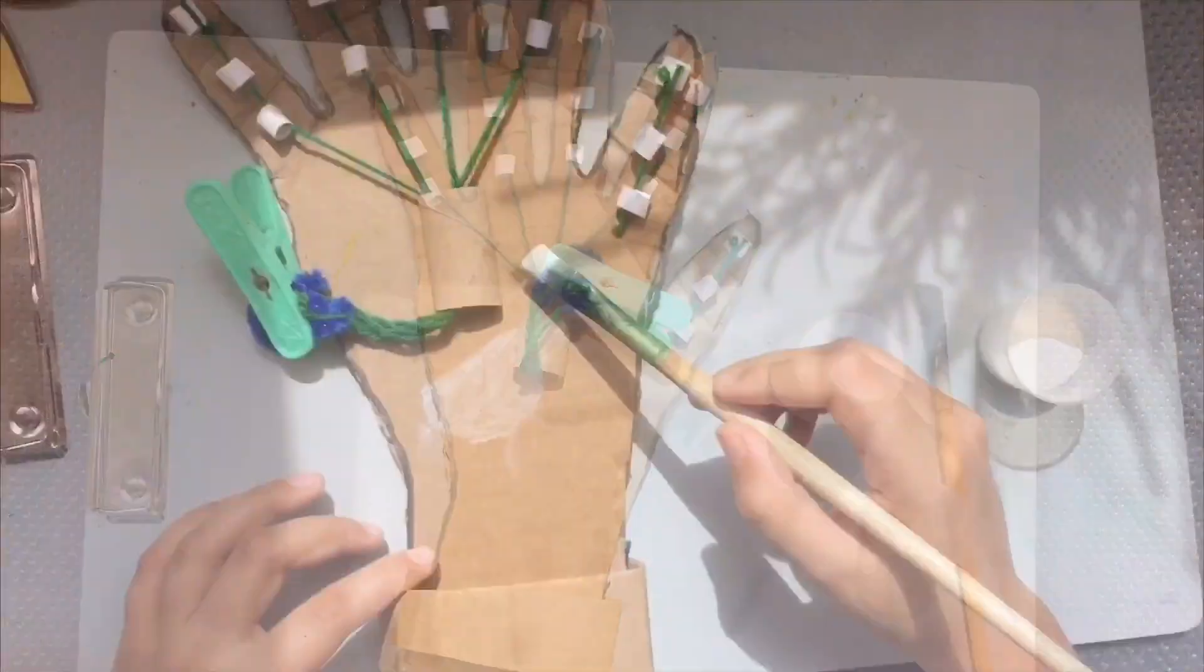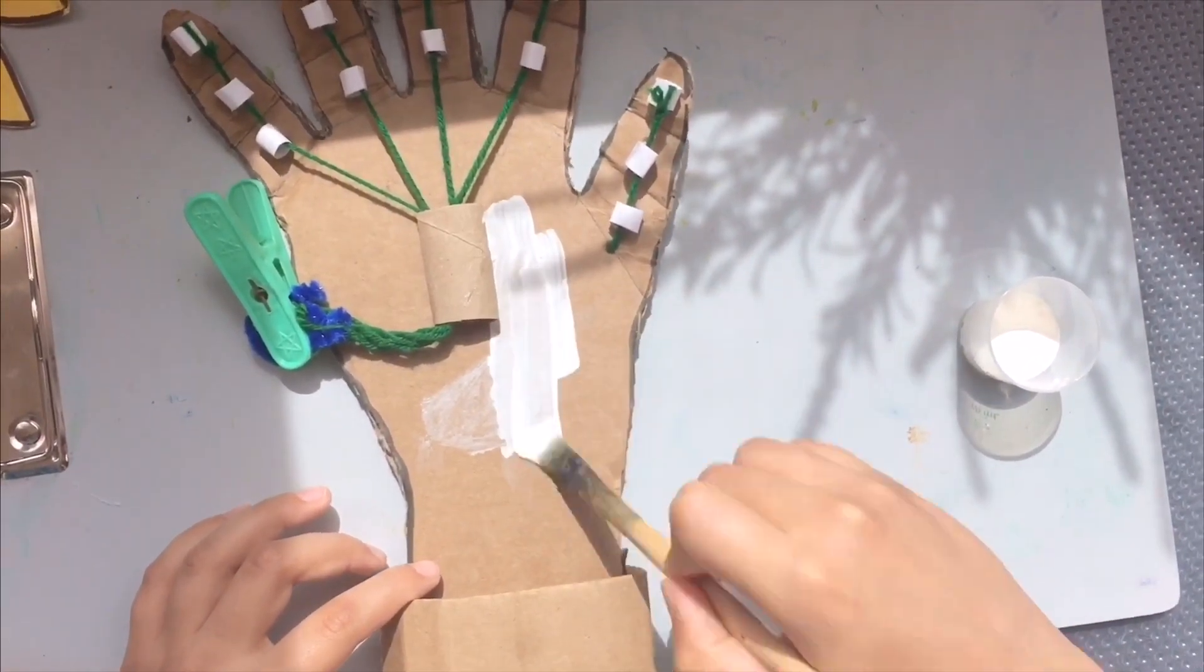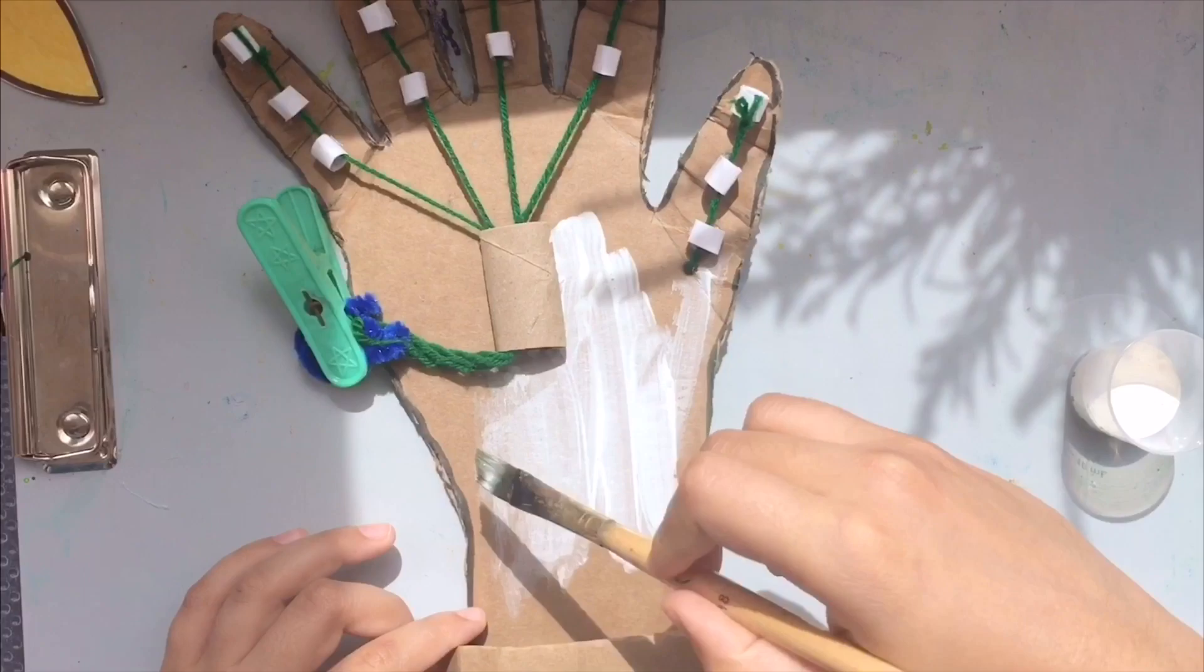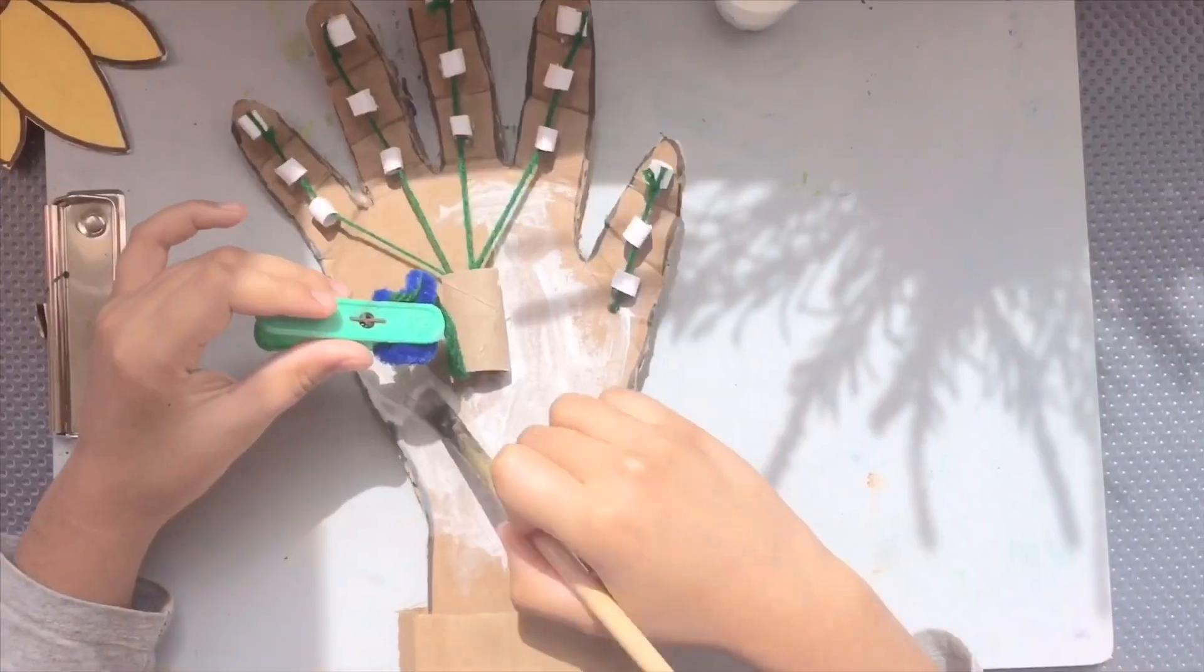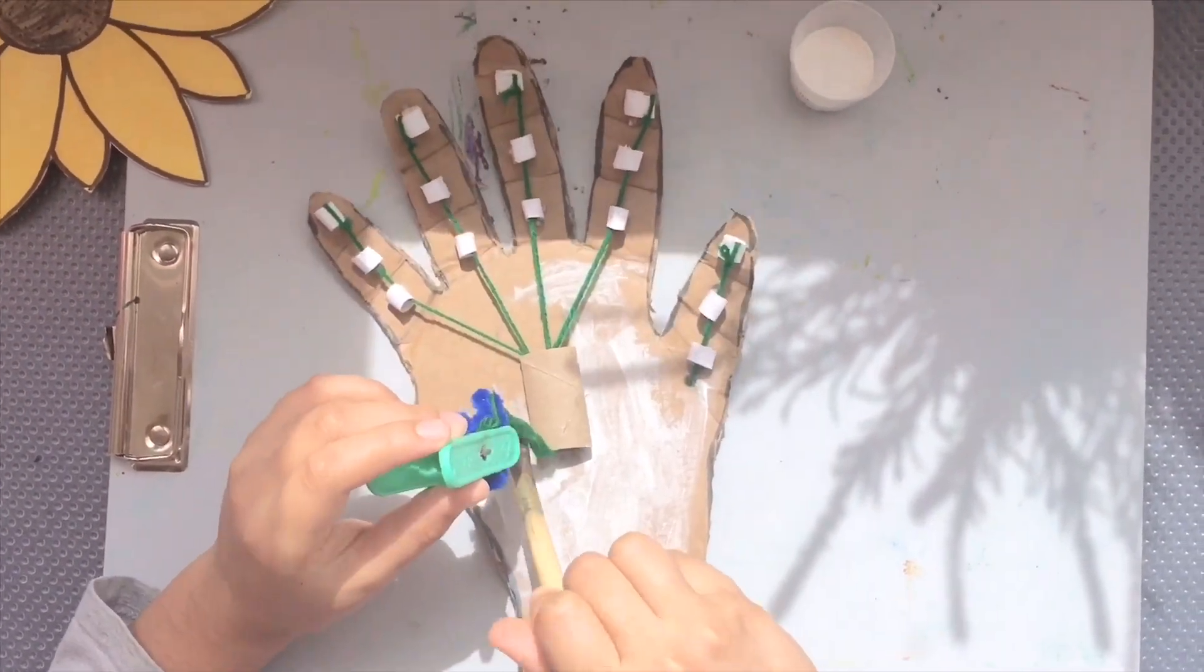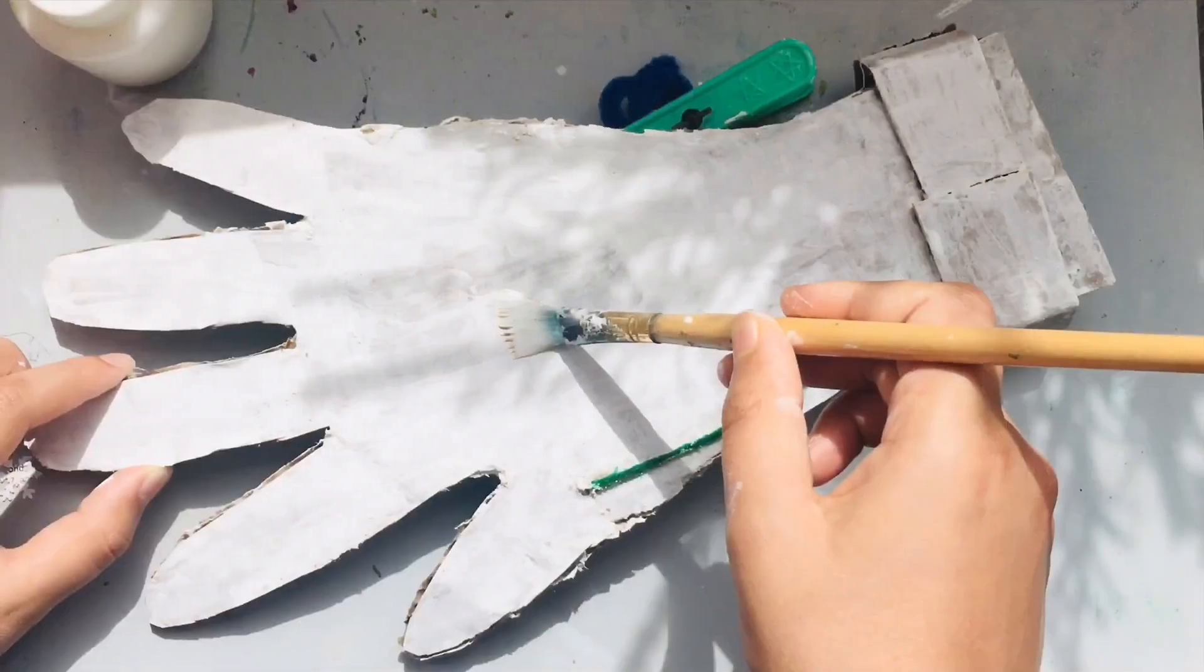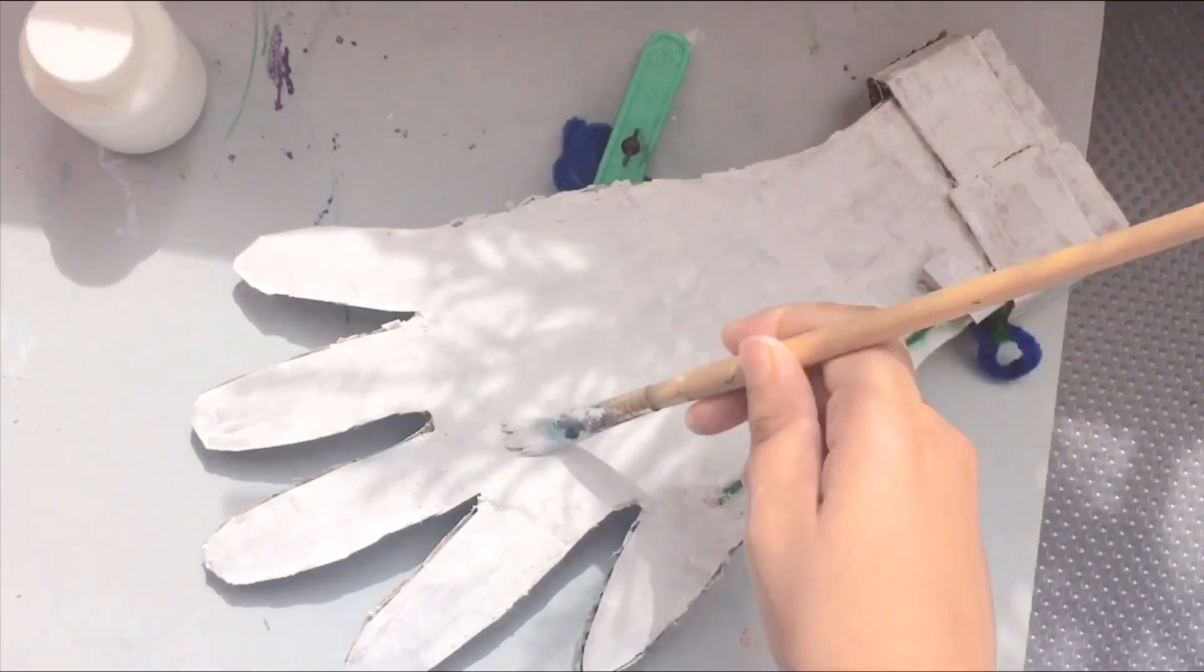Now, let's paint. Paint. I want to paint white. It'll look more like a robotic hand. Paint all over. Underneath. Yeah. Now, let's do the back side. Yeah.